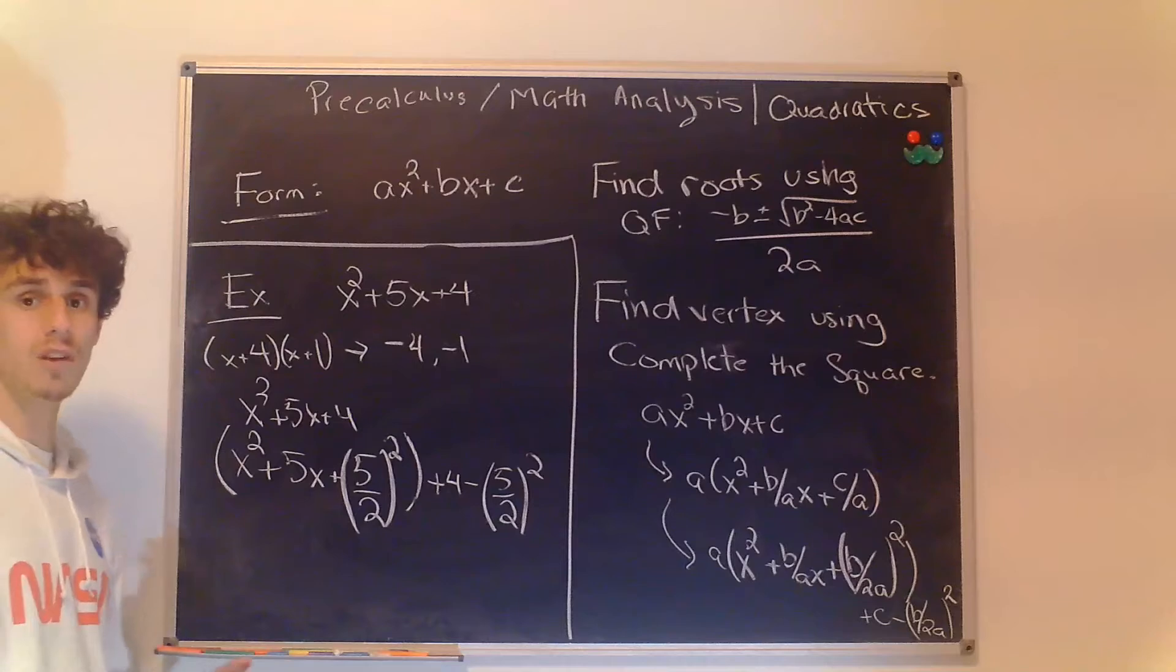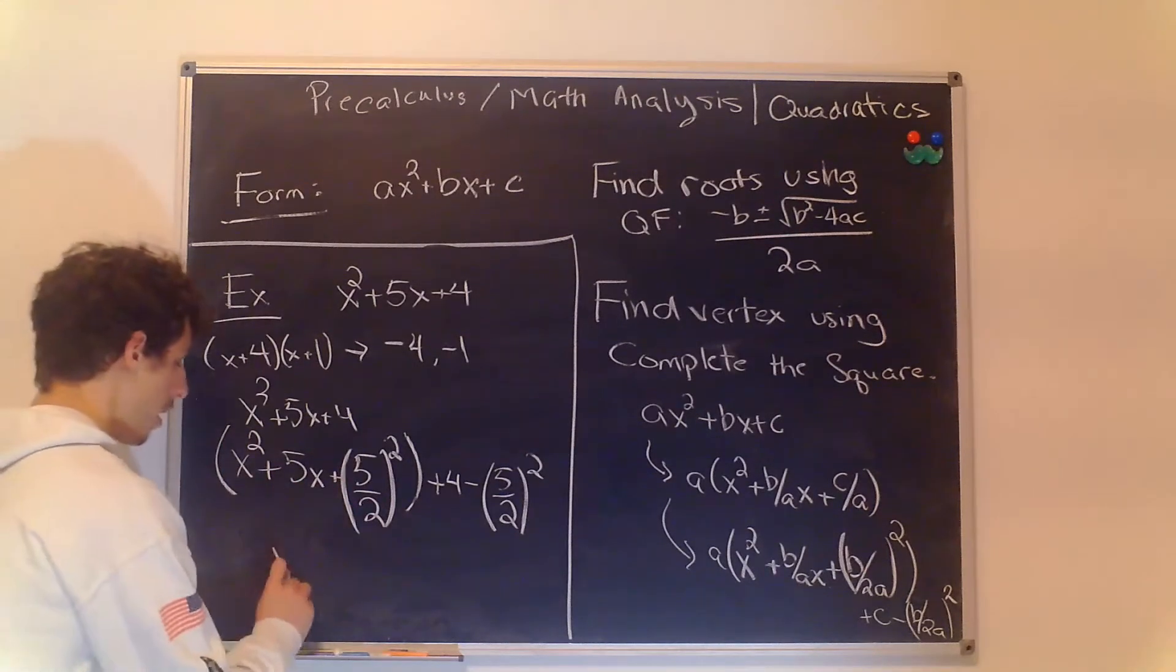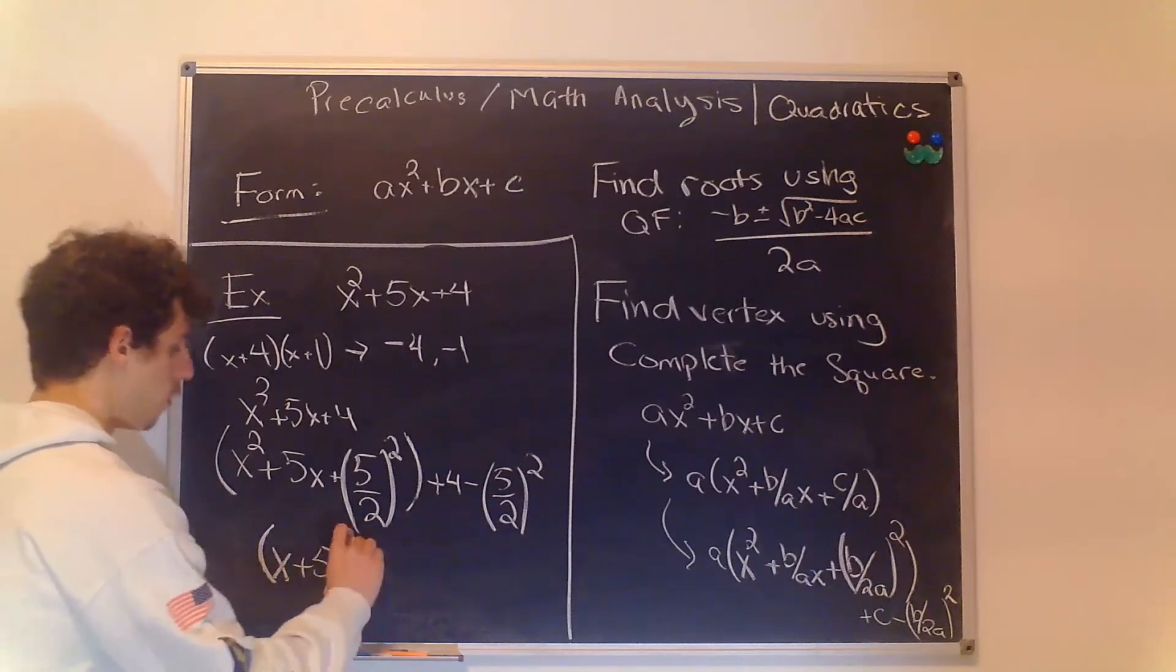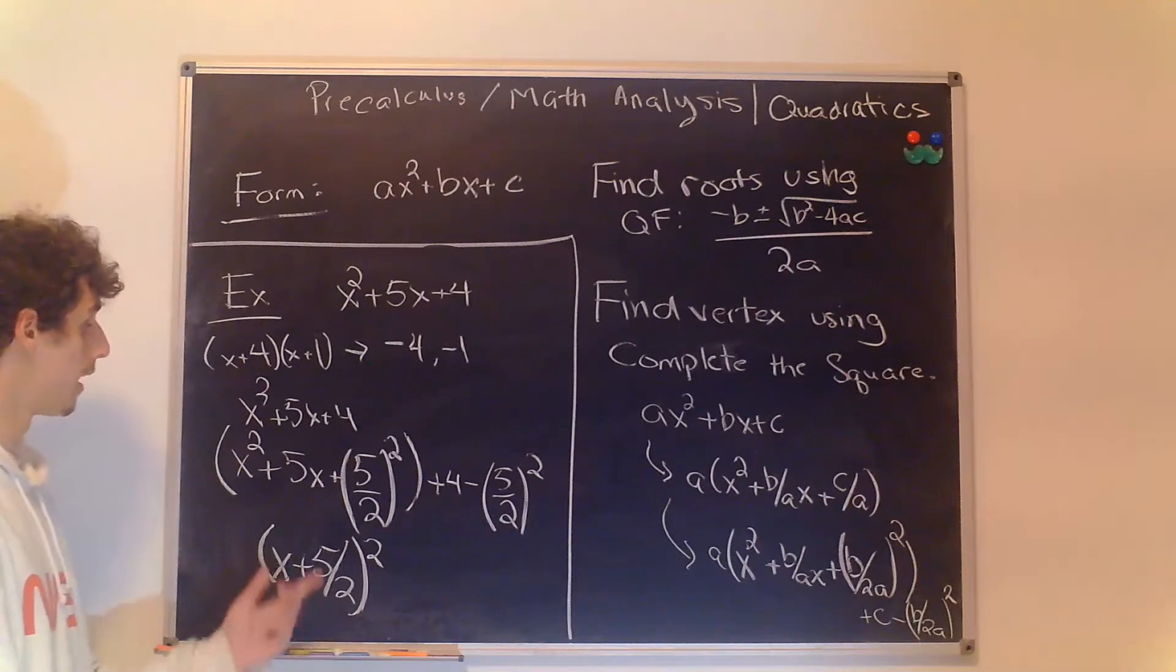But now we have what is called a perfect square polynomial. That's because this polynomial is actually made up of this term x + 5/2 twice so this is (x + 5/2)².